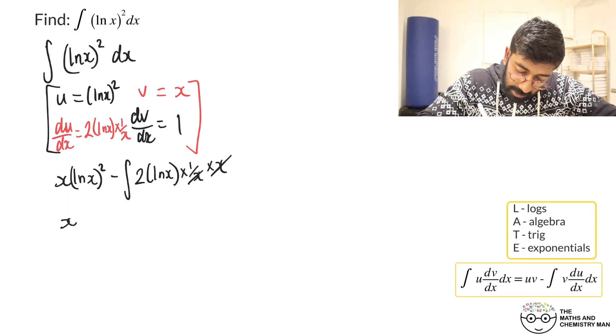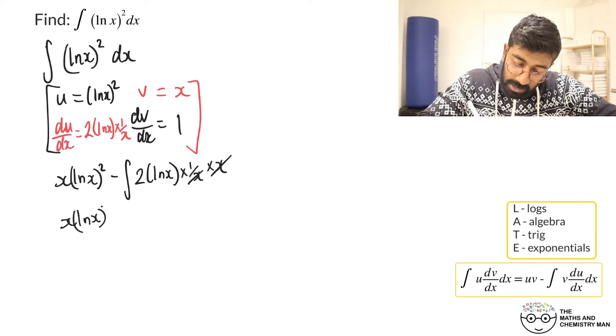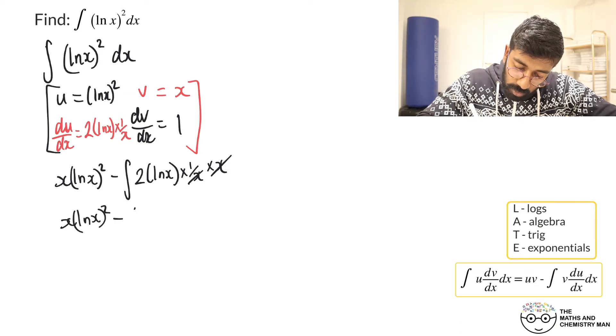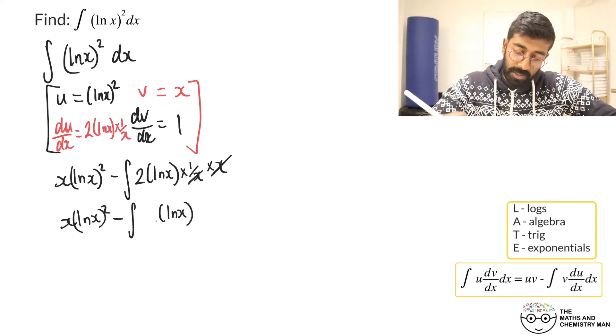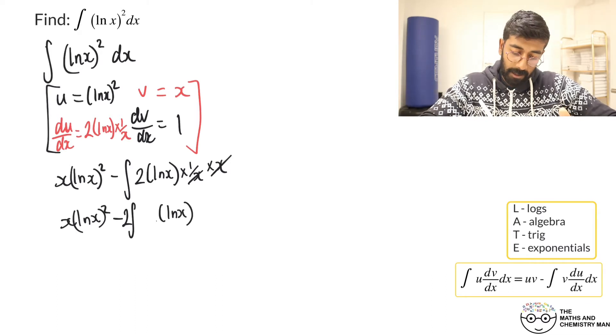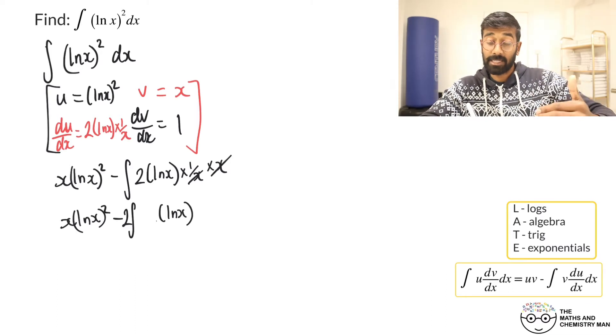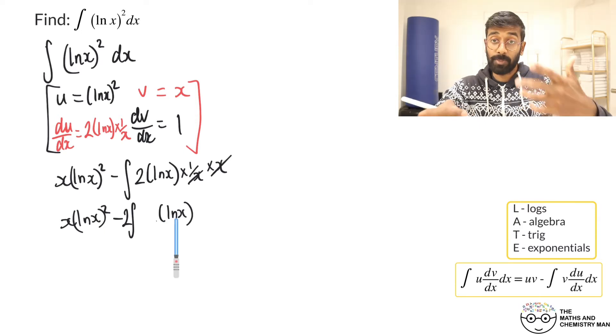Actually all we've got is x ln(x) squared subtract the integral of 2ln(x). Now the other thing I'm going to do is bring that 2 outside of our integral. Now what we've got to do is integrate ln(x). We've done that before. To integrate ln(x) we're going to have to use by parts again.